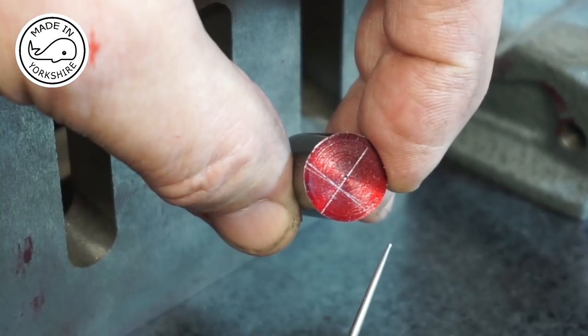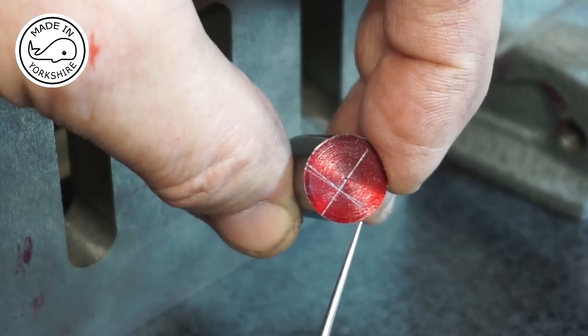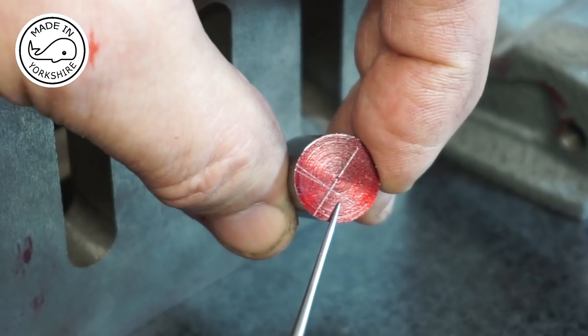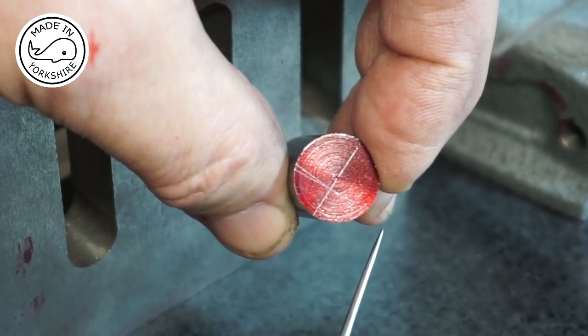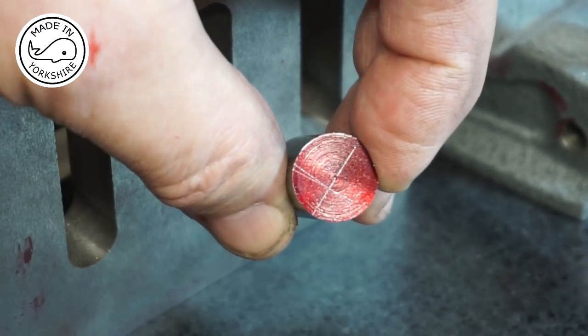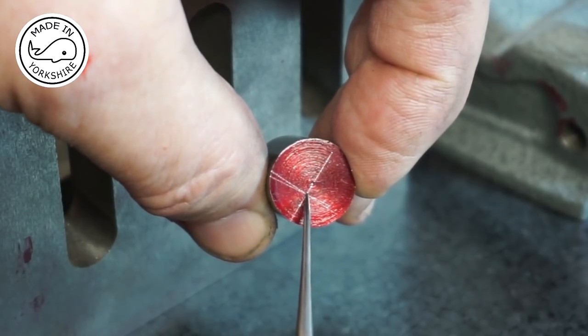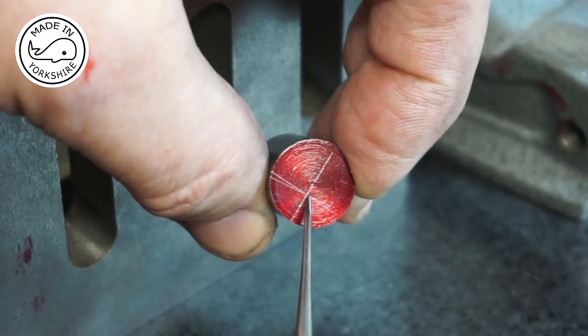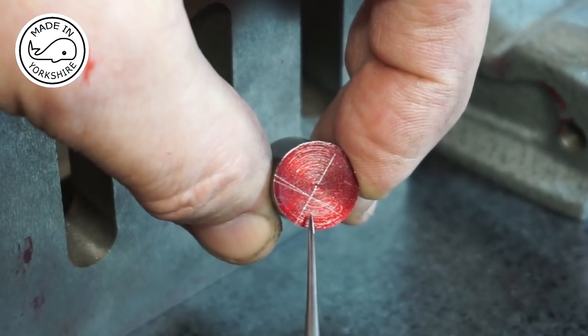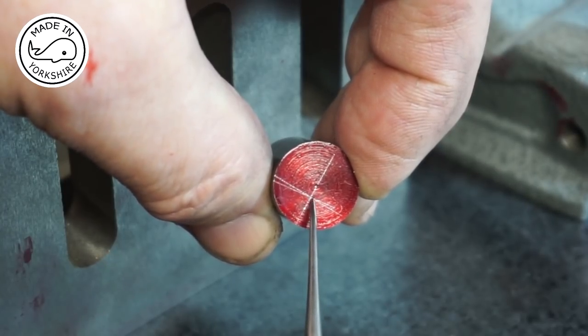I've put it on the lathe in the three jaw chuck and just faced off the end. Now I've marked up a centre line and then perpendicular to that, I've marked up another line which is 3/32nds of an inch offset from the centre. I need to turn a boss which is 7/16ths in diameter and then drill and ream a hole 9/32nds of an inch, which is where the crankshaft will fit.